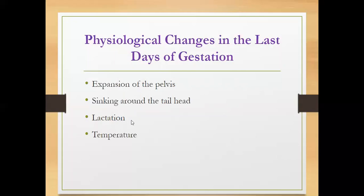Lactation is another sign — most dams are already producing milk before birth. Most dams except sows experience a decrease in body temperature before giving birth; sows, on the other hand, tend to increase their body temperature. Of the physiological signs, lactation is the marquee sign that an animal is about to give birth, since temperature is not always reliable. For pigs, because they increase body temperature, farm hands typically shower sows before farrowing.